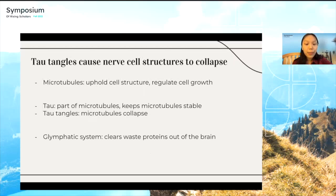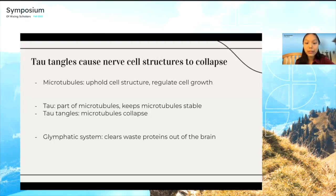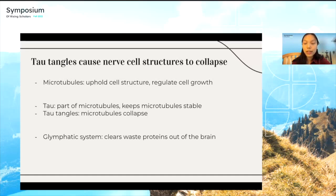The second biomarker is neurofibrillary tau tangles, which are part of microtubules in neurons. Microtubules uphold cell structure and regulate cell growth, and tau is a key factor in keeping microtubules stable. Sometimes tau proteins separate from microtubules and stick to each other, creating tau tangles, which cause microtubule collapse and neuronal death. One last term is the glymphatic system, whose role is to clear waste proteins — including soluble tau and soluble amyloid beta peptides — out of the brain.